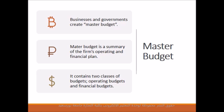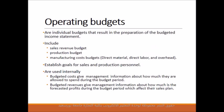The master budget contains two classes of budgets: operating budgets and financial budgets. Operating budgets are individual budgets that result in the preparation of the budgeted income statement. These include the sales revenue budget, production budget, and manufacturing cost budgets — with individual budgets prepared for each manufacturing cost element: direct material, direct labour, and manufacturing overhead. Operating budgets establish goals for the sales and production personnel and are intended to be used internally. Budgeted costs give management information about how much they are allowed to spend, and budgeted revenues indicate forecasted profits during the budget period.